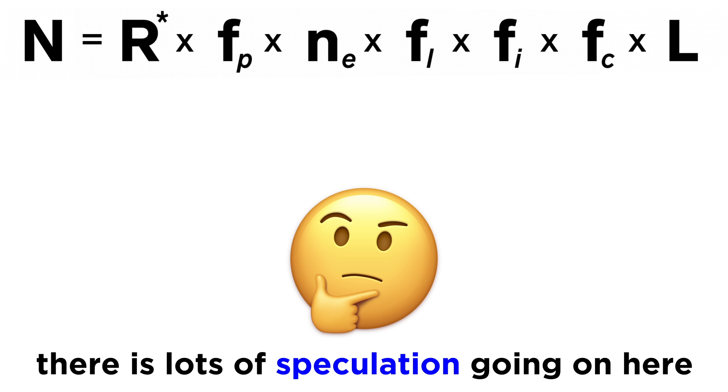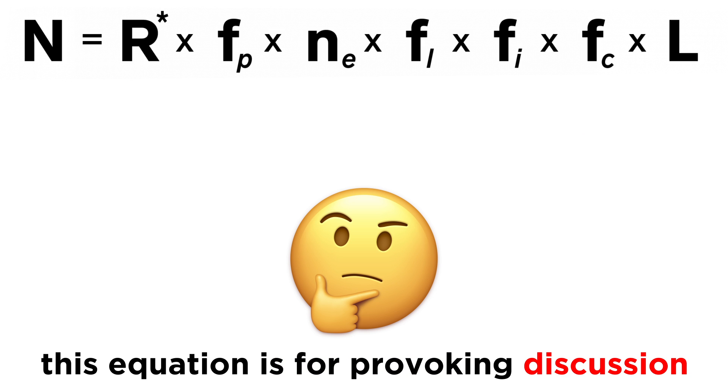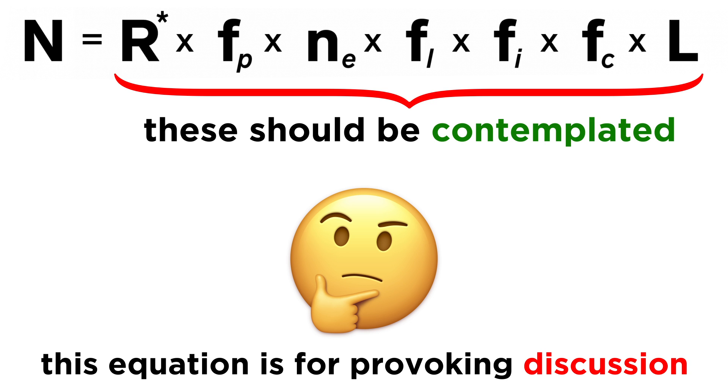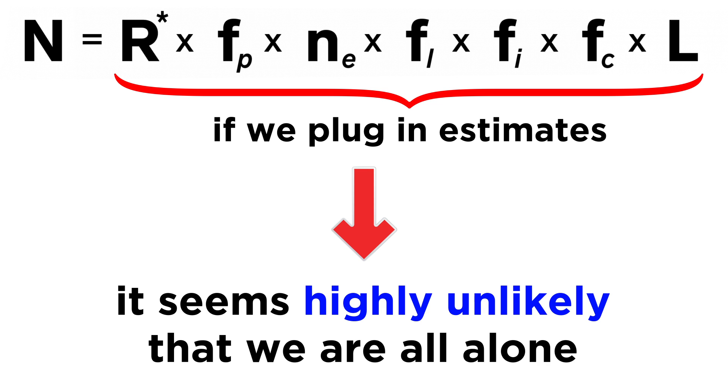This equation is obviously overflowing with speculation, as these variables are difficult to estimate without huge amounts of uncertainty. Therefore, it was not meant to be used to arrive at a rigorous value, but rather to provoke thought and discussion regarding the potential for alien life. It highlights key variables that are involved in such a search, and begs for their contemplation. And if we plug in a variety of estimates for these variables, the equation frequently yields results that tell us that it is rather unlikely that we are the only intelligent civilization in the galaxy, let alone the universe.